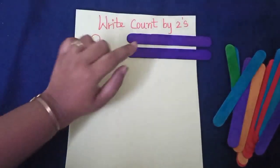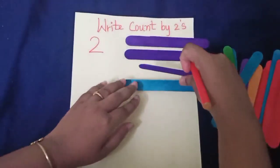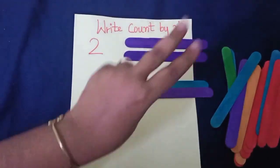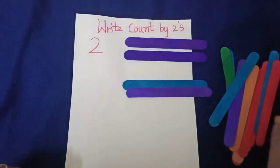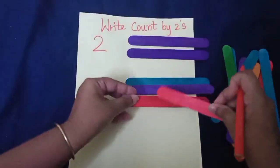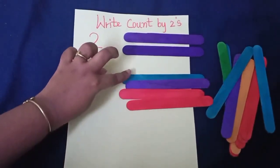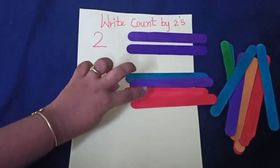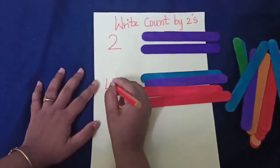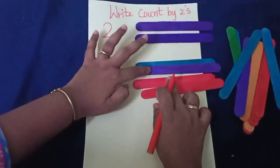Now see how many sticks are there? 2. So we have to keep 2 sticks. And with this you are going to add 2 more sticks. Ma'am is taking 2 more sticks and adding with this. So totally how many sticks are there? 1, 2, 3, 4. So what we have to write? 4. And how many sticks are there — 1, 2, 3, 4.